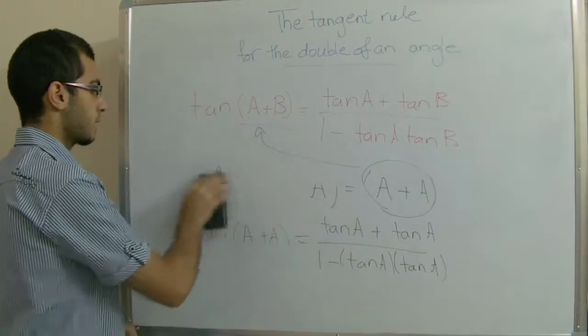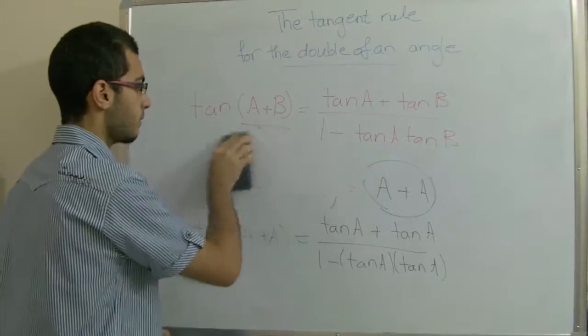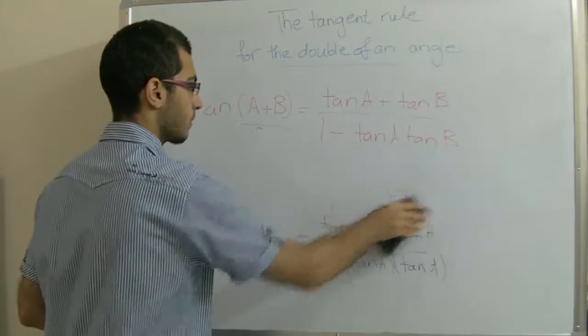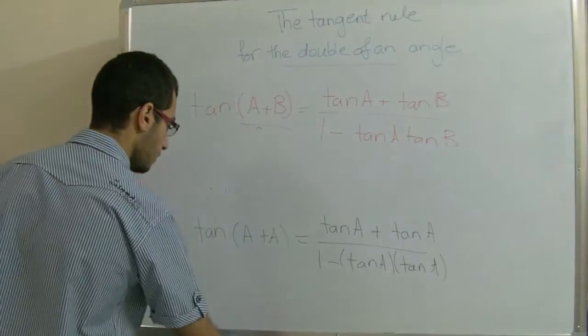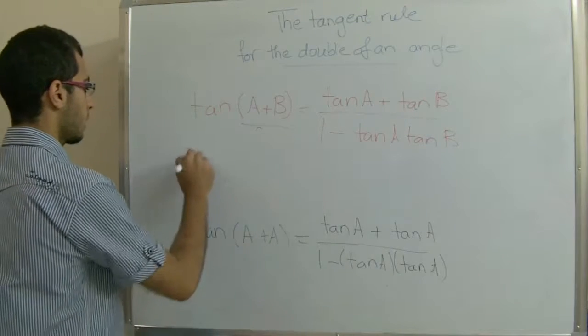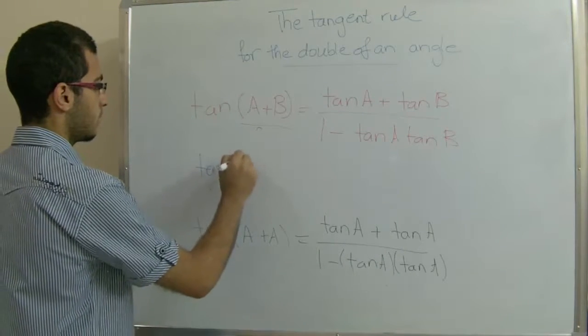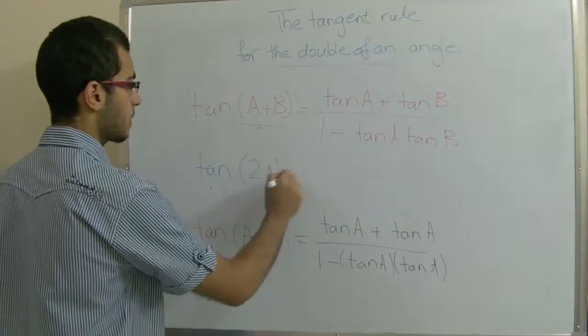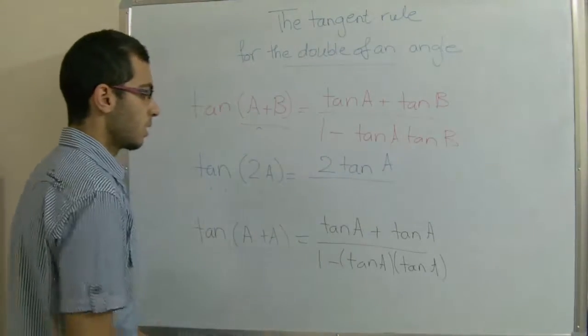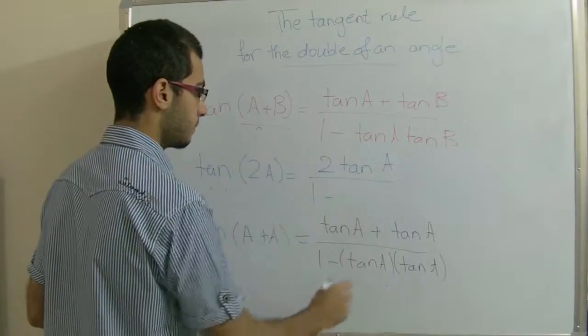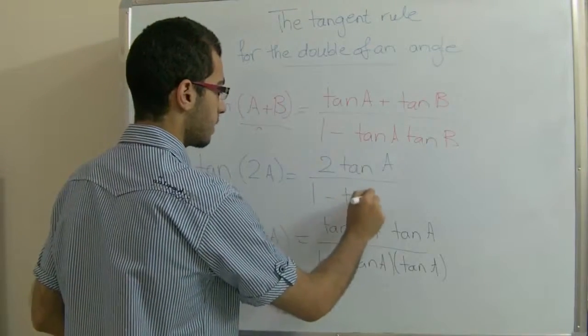This gives us 2 tan A over 1 minus tan squared A.